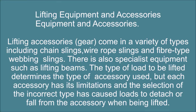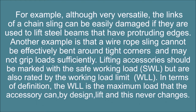Lifting accessories, gear, come in a variety of types including chain slings, wire rope slings, and fiber type webbing slings. There is also specialist equipment such as lifting beams. The type of load to be lifted determines the type of accessory used, but each accessory has its limitations and the selection of the incorrect type has caused loads to detach or fall from the accessory when being lifted. For example, although very versatile, the links of a chain sling can be easily damaged if they are used to lift steel beams that have protruding edges. A wire rope sling cannot be effectively bent around tight corners and may not grip loads sufficiently.